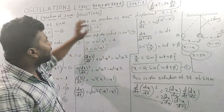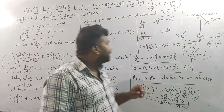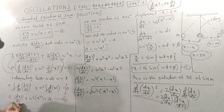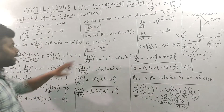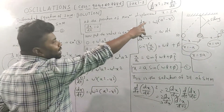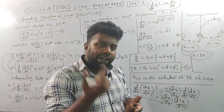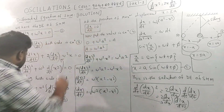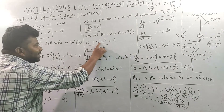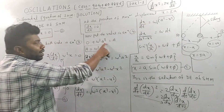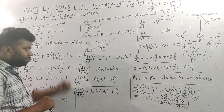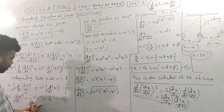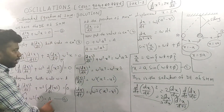So if x = ±A, then dx/dt = 0, because at maximum displacement the velocity is zero. We now substitute into equation 4: (dx/dt)² + ω²x² = ω²A². So (dx/dt)² = ω²A² − ω²x², which gives dx/dt = ω√(A² − x²).